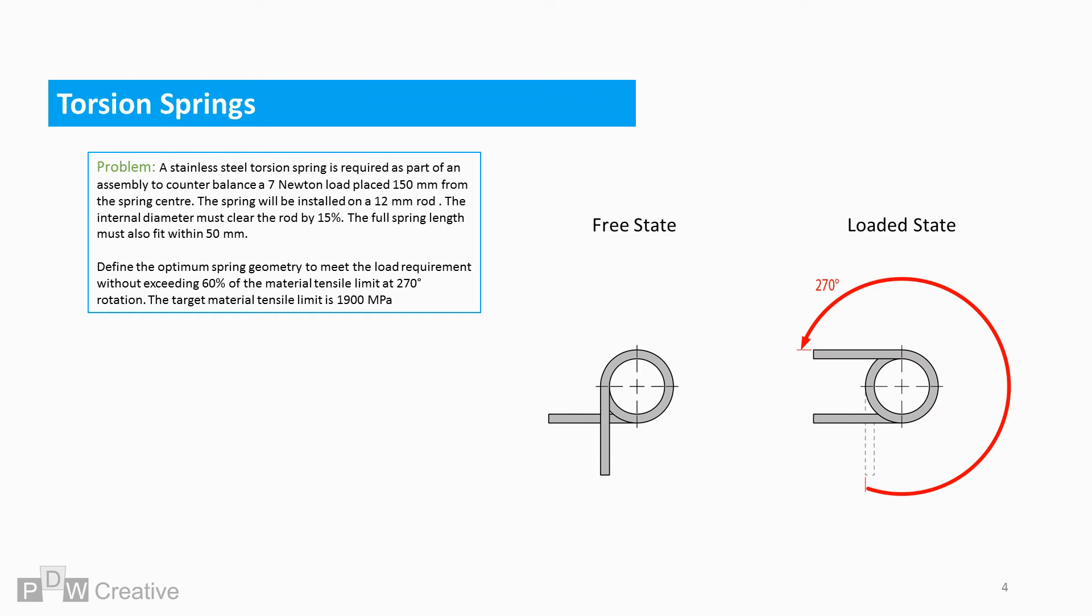Define the optimum spring geometry to meet the load requirements without exceeding 60% of the material tensile limit when one arm is rotated 270 degrees to a loaded position. The estimated material tensile limit is 1900 MPa.